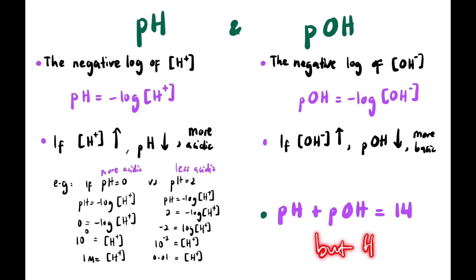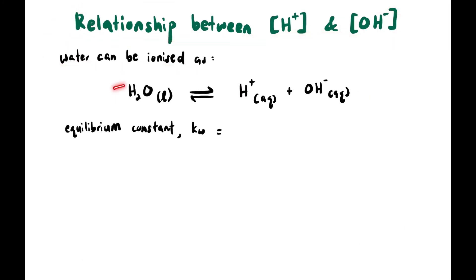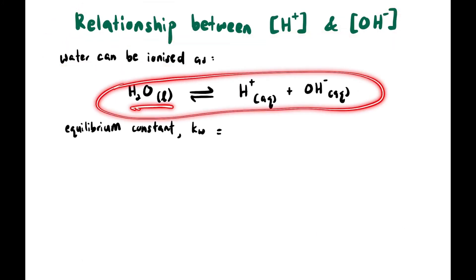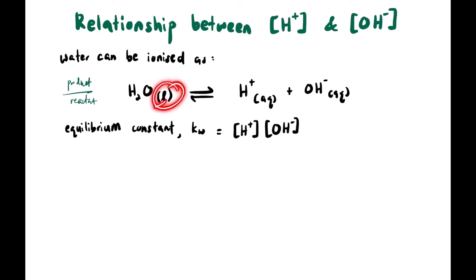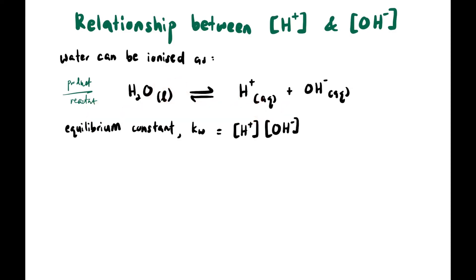Did you know that pH + pOH = 14? Here is why: water can be ionized as H₂O → H⁺ + OH⁻. Writing the equilibrium constant expression, we call it Kw: Kw = [H⁺][OH⁻]. Since water is a liquid, it is not included in the equilibrium expression. This is called the ionic product of water.